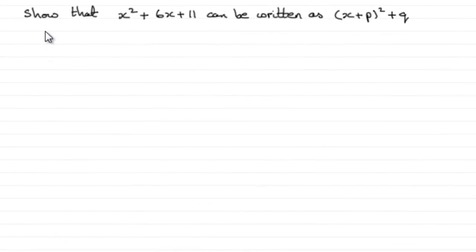Now with this question, we've got to show that x² + 6x + 11 can be written as (x + p)² + q, where p and q are integers which we've got to find.